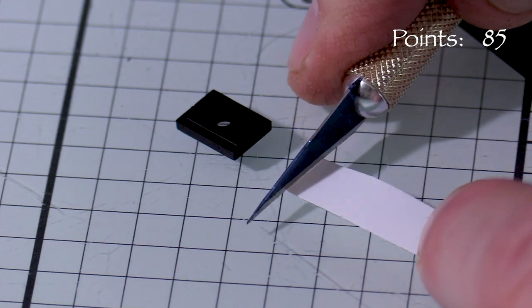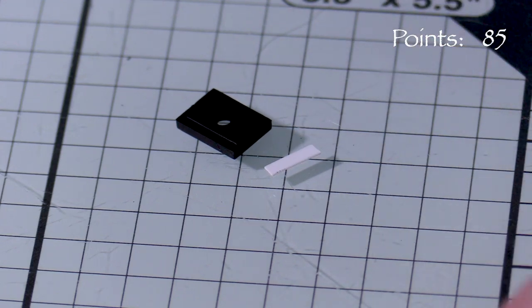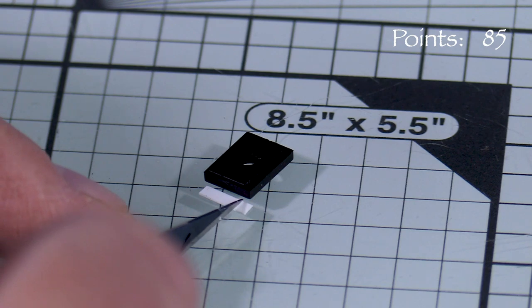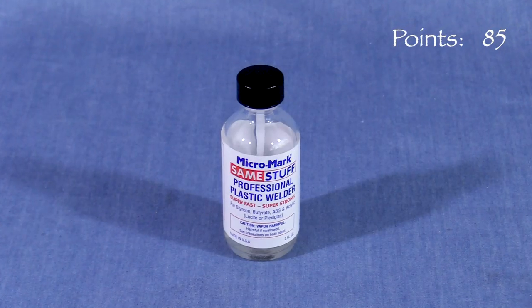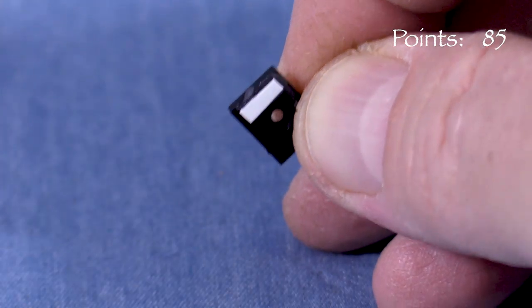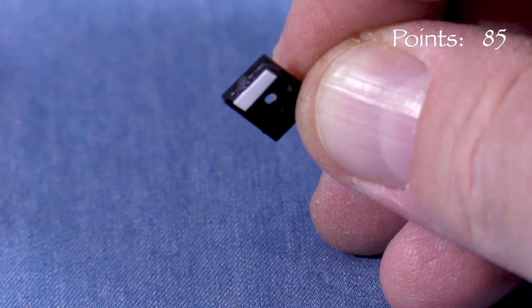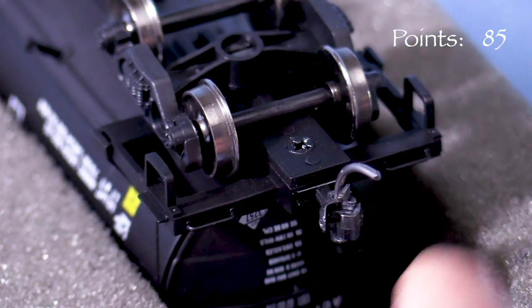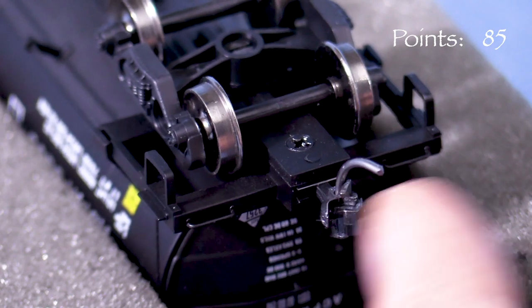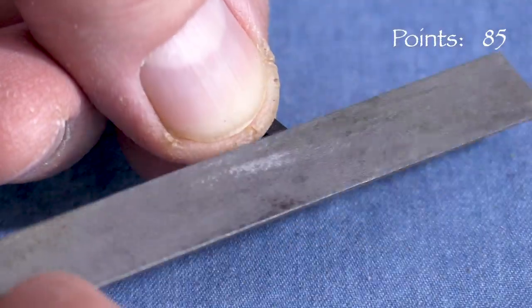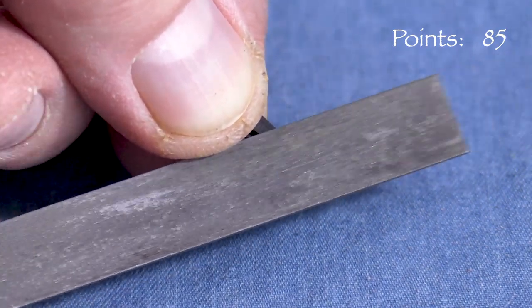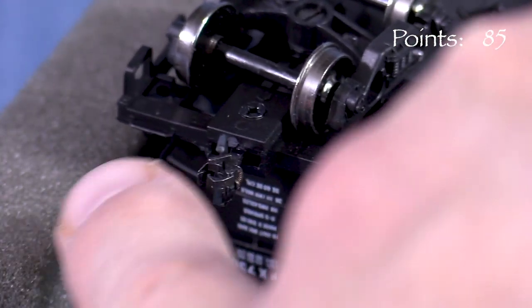I'll cut a small strip of 10 thousandths styrene to fit inside the draft gear box. The Atlas draft gear box lid is stepped so that part of it fits inside the draft gear box. I'll use some liquid styrene cement to secure the shim. The strip needs to be the same width as the inner part of the lid. Now I'll reassemble the couplers. The B end worked fine but the A end is a little sticky. The coupler can't snap back to center like it's supposed to. After taking the coupler box apart again, I'll use a flat file to remove just a little bit of material from the shim. Now it works like it's supposed to.